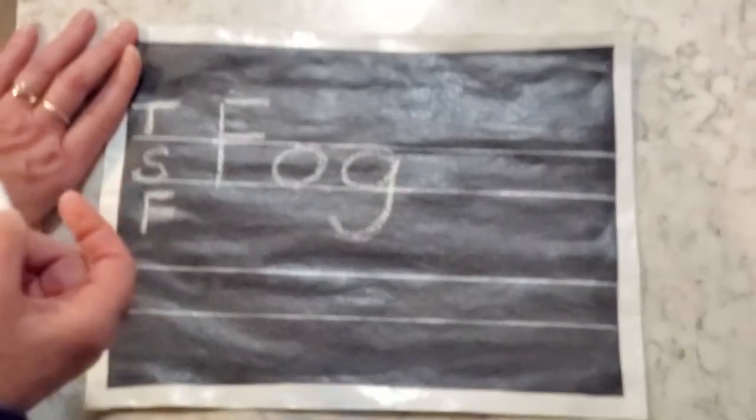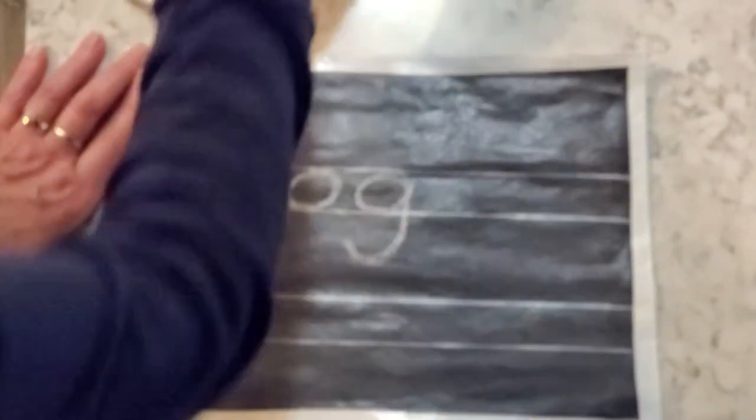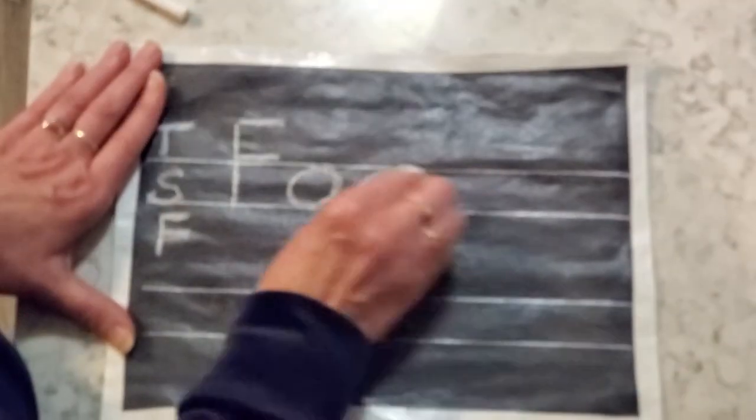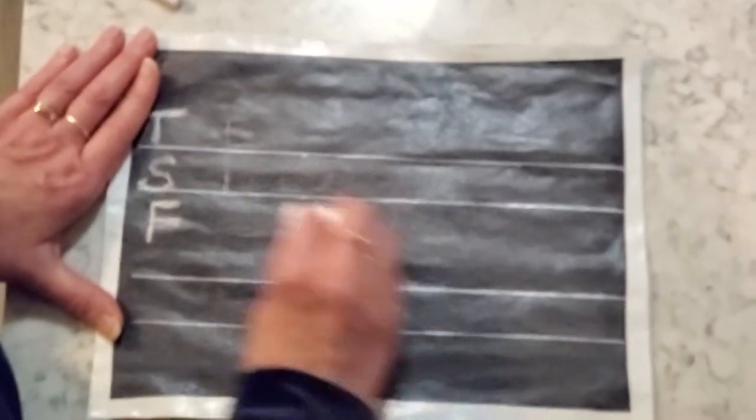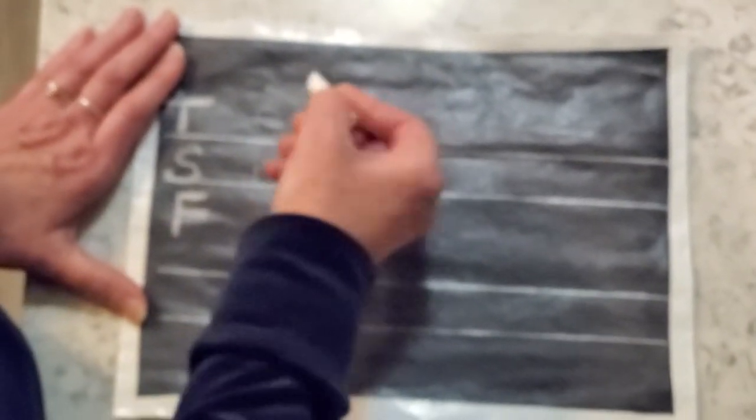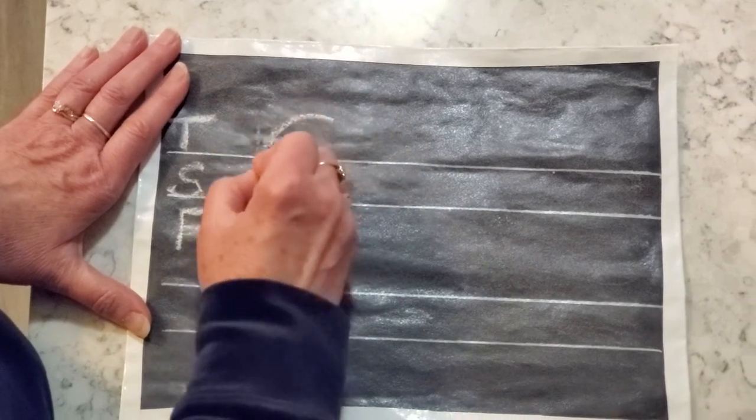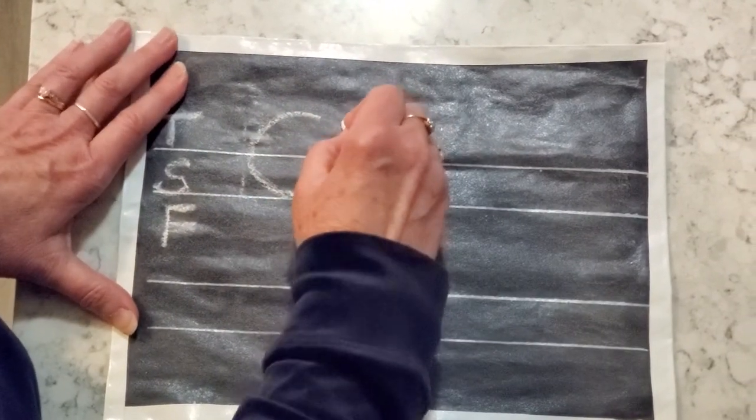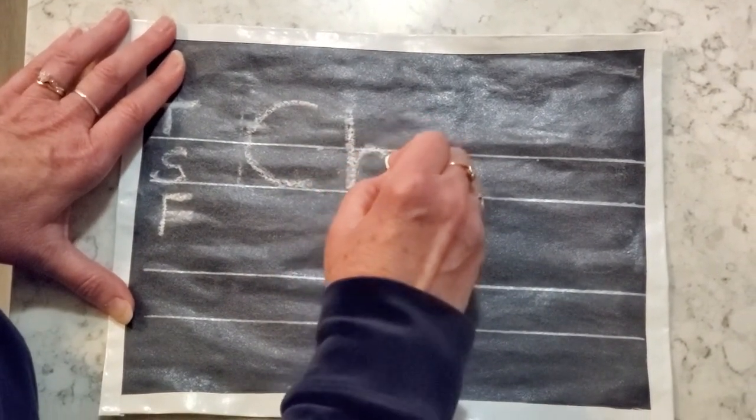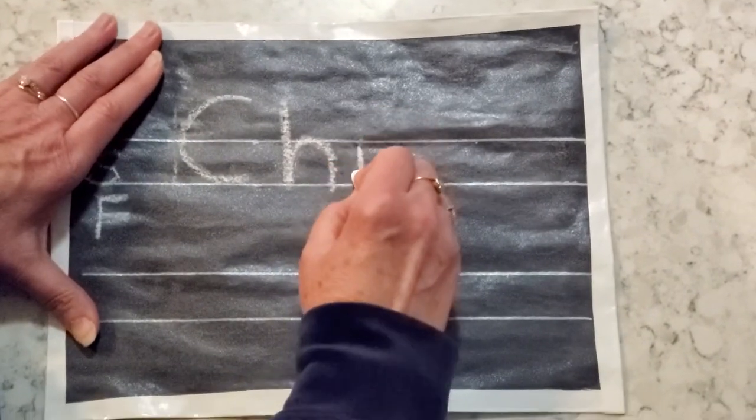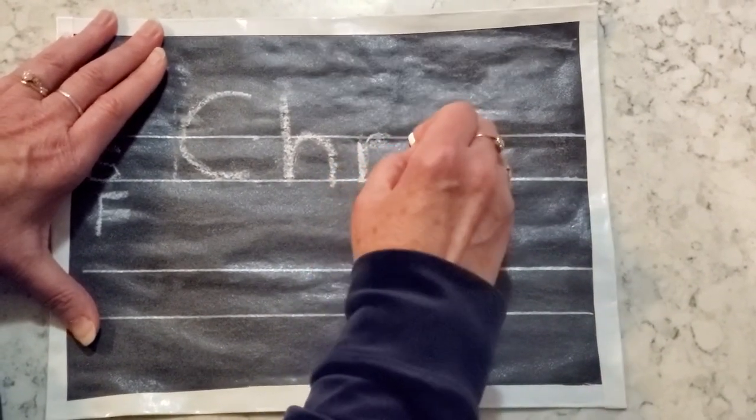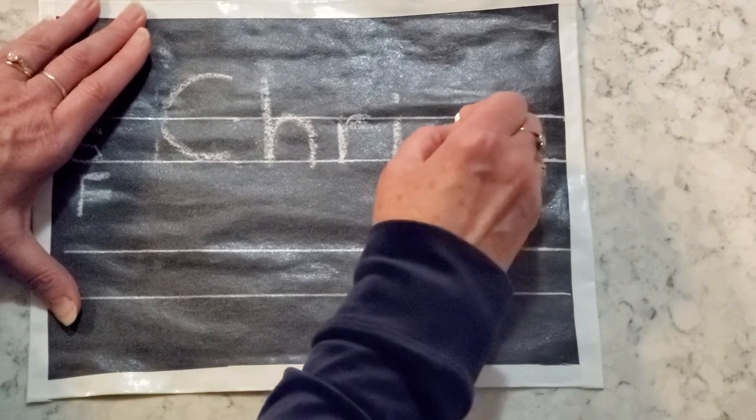So when you're using this paper it's good to have it be for like writing somebody's name. So say your child's name is Chris. You as the parent would go and you'd write the child's name. Make sure you're using the correct spaces.